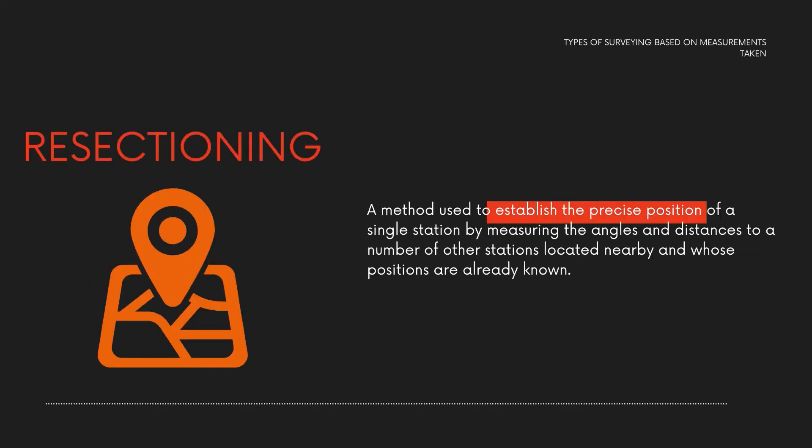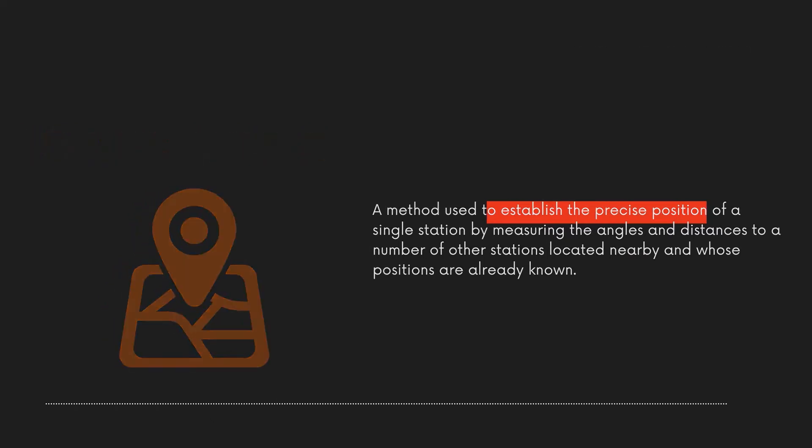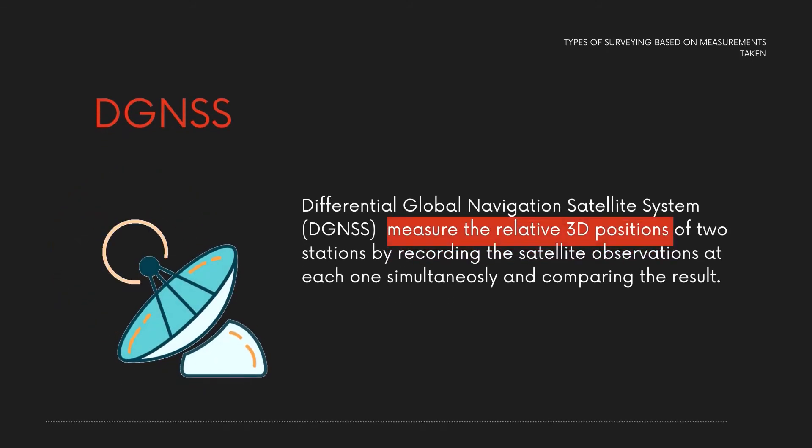V-sectioning: a method used to establish the precise position of a single station by measuring the angles and distances to a number of other stations located nearby, whose positions are already known.